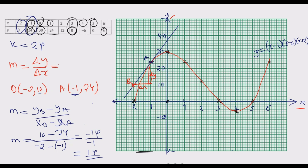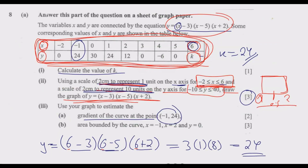Notice that negative 2 minus negative 1 gives negative 1, because the two negatives become positive giving negative 2 plus 1. So the estimate of the gradient of the curve at that point is 14.